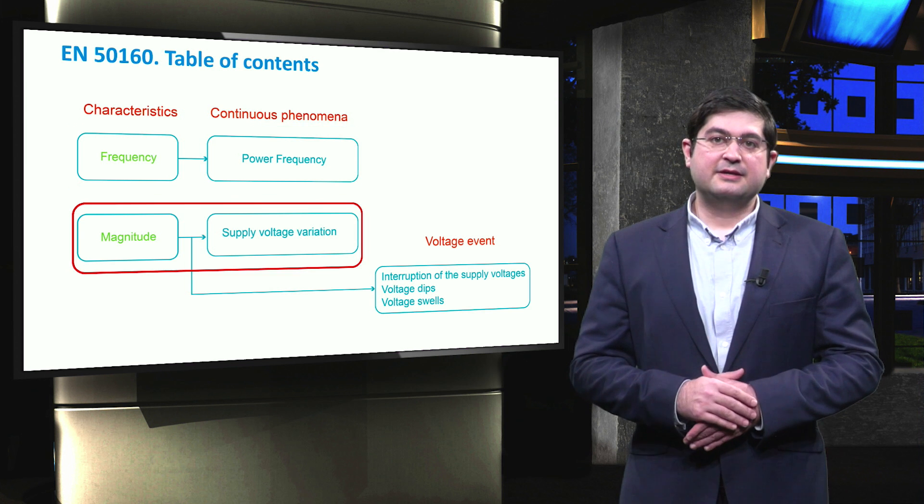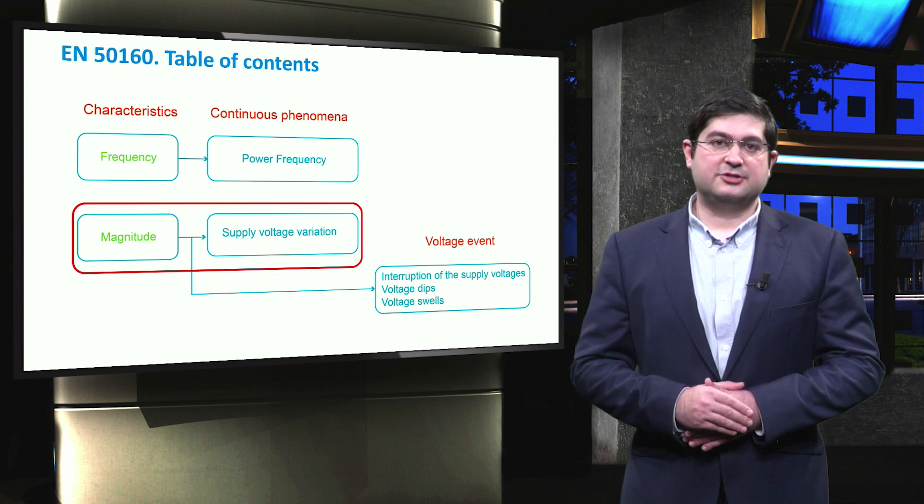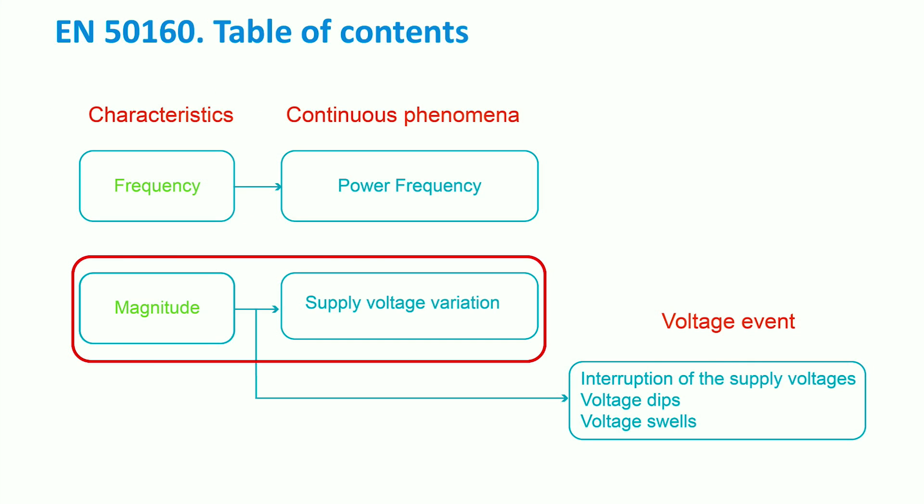The second characteristic is the magnitude of the voltage. Also, various events for voltage like interruption of supply voltage, voltage dips, and voltage swells are described in this standard.